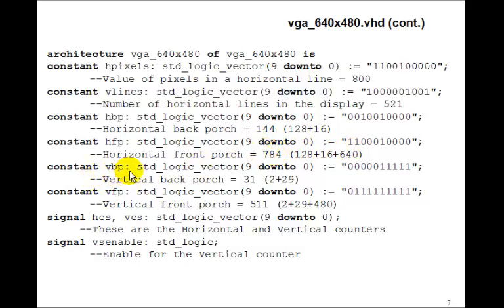When the counter gets to horizontal front porch, that's the 128 plus the 16 plus the 640, or the 784. The vertical back porch is 31. Remember, it's 2 pixels for the vertical sync pulse plus the 29 for the back porch. So this binary number is 31. The vertical front porch is 511. That's 2 for the sync pulse plus 29 plus the 480 display region.